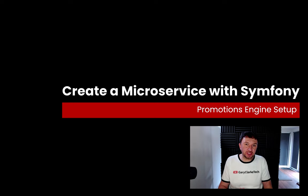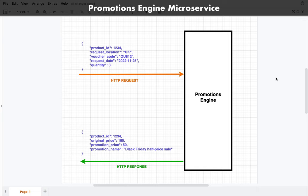Now that we've seen what microservices are and discussed how they might benefit us, let's talk about what we're going to build, and then we'll finish off by installing the latest version of Symfony so we're ready to start development. We're going to build a promotions engine, which is a form of affiliate marketing tool. If you look at the current PHP developer jobs market you'll see loads of companies building these types of things as microservices, so I think it will be a good contemporary exercise.